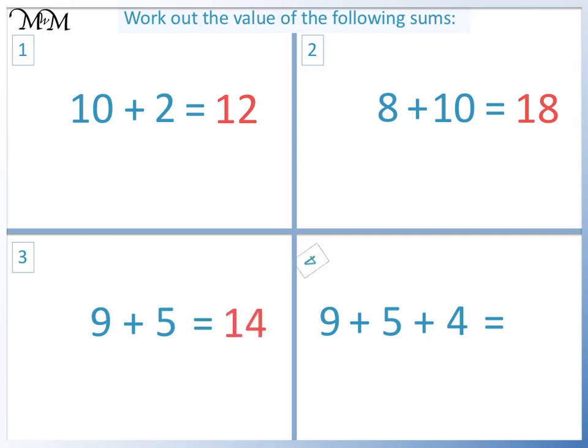Question 4. We can make a double because 5 plus 4 equals 9. 9 plus 9 is the same as 2 times 9. 2 times 9 equals 18.